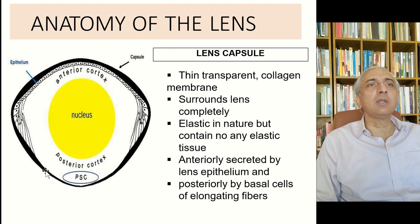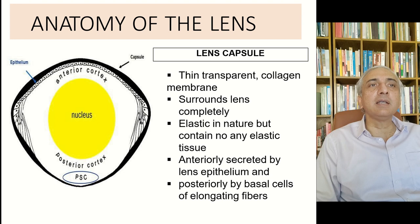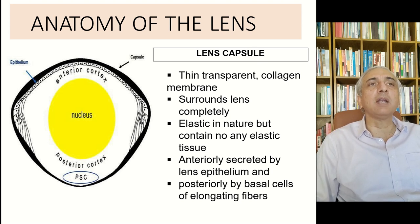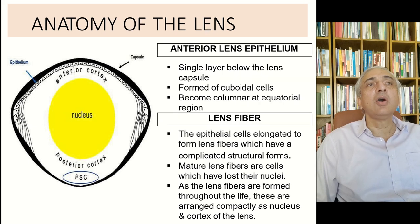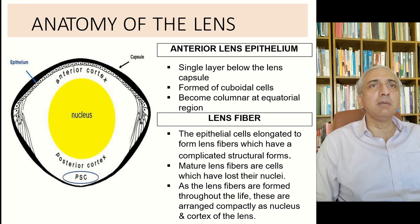The PSC — posterior subcapsular cataract — is seen in front of the posterior capsule. The posterior capsule is very important in cataract surgery because this is where the intraocular lens is placed. If there is a rent, called a posterior capsular rupture, vitreous can prolapse forward. If there is insufficient posterior capsule, you may need to implant the IOL in the sulcus, the anterior chamber, or perform scleral fixation.